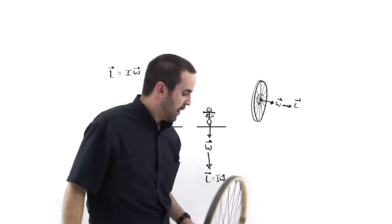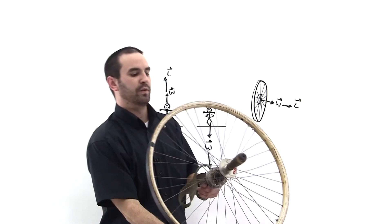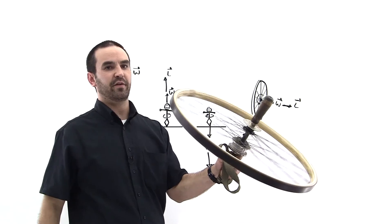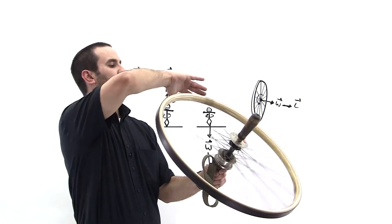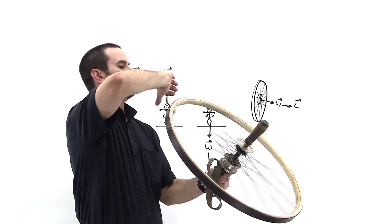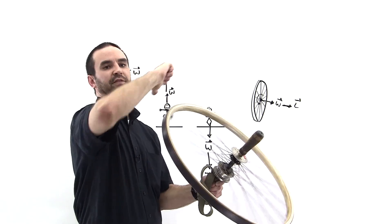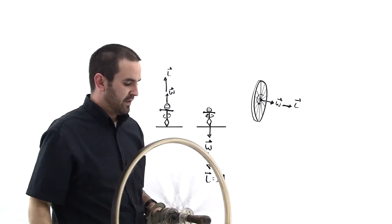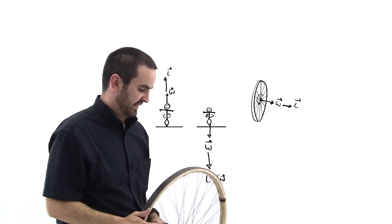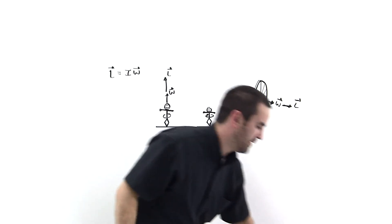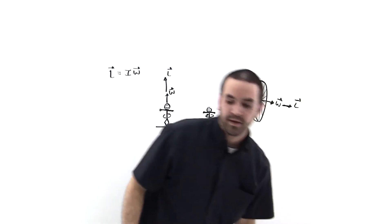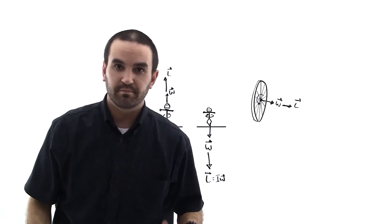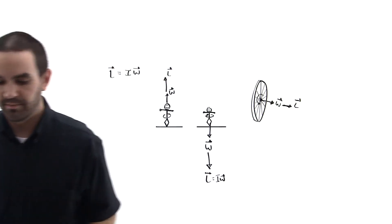Let's do another one — turn it back in the other direction. Curl our fingers in the direction of rotation and our thumb points the other way. That's the convention for angular velocity whenever it's spinning that way. Try it out — it'll come up on the exam. See you next time.